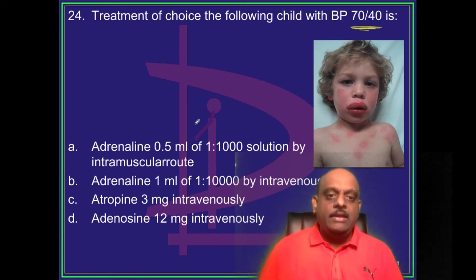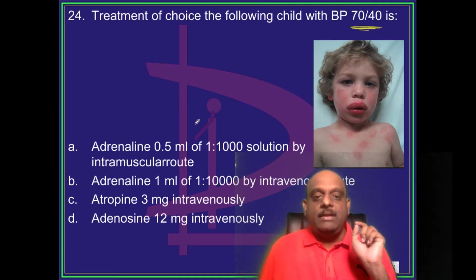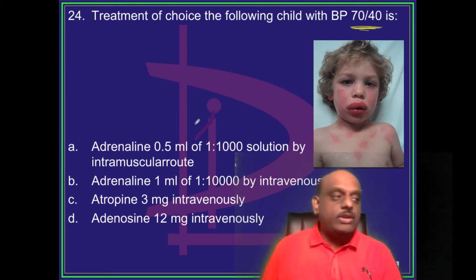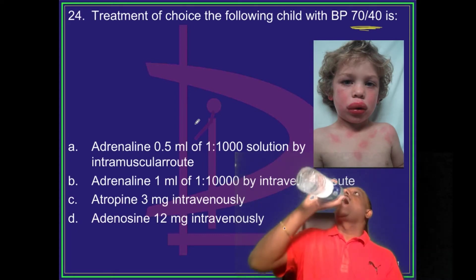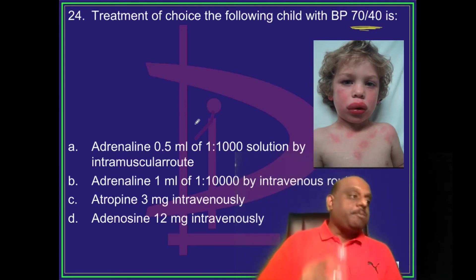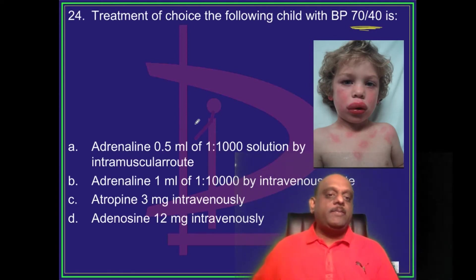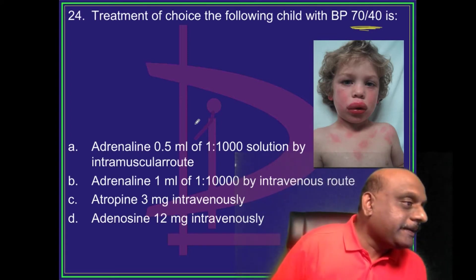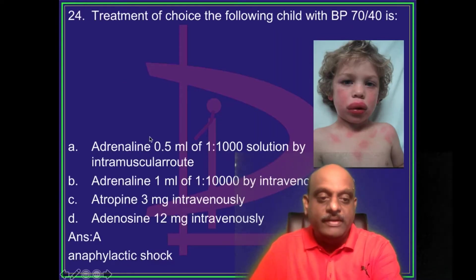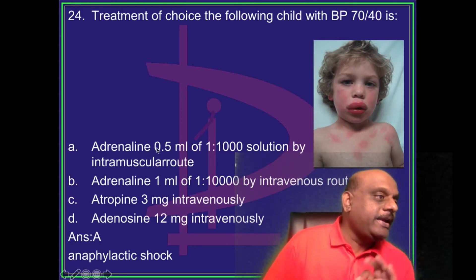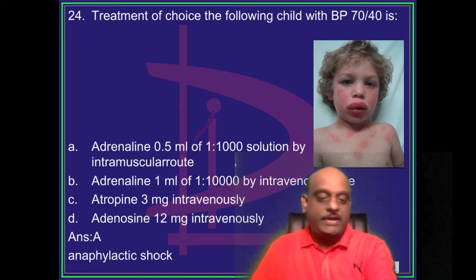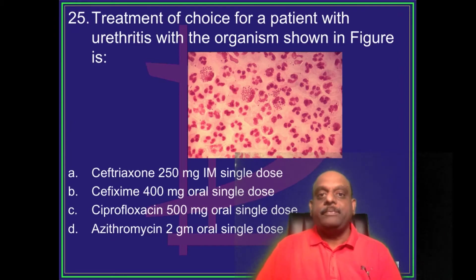Harshit Gauda proposes adrenaline 0.5 mL with 1:2000 solution by intramuscular route. Roshan Yadha and Amrita think the same. Satya Snita and others confirm: intramuscular is the correct route of choice. This is anaphylactic shock, as confirmed by Saito Murgan as well.